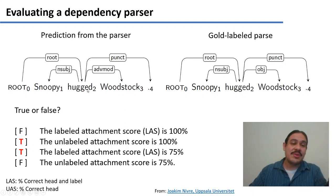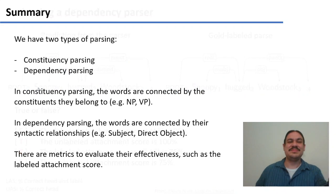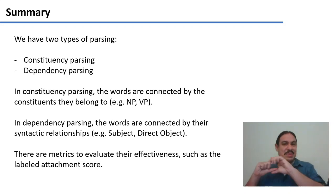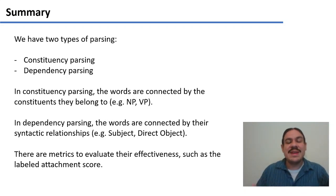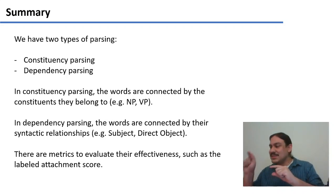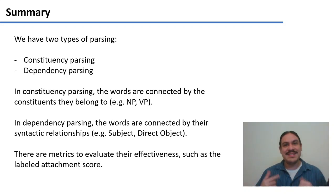As a summary: we now have two types of parsing — constituency parsing and dependency parsing. In constituency parsing, words are connected according to what constituents they belong to, such as noun phrase or verb phrase. In dependency parsing, words are connected by their syntactic relationships: a verb is connected to its subject, its direct object, and so forth. There are metrics to evaluate whether parsers are working, such as the labeled attachment score. In the next video, we will look at how to build a dependency parser.